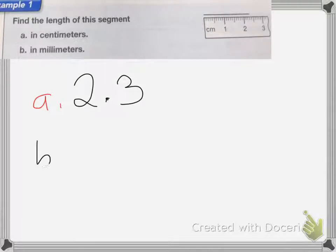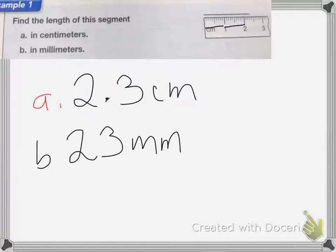In millimeters, if there are 10 millimeters in between each centimeter, that means it's going to be 23 millimeters. Okay, because there's 20 between the 0 and the 2, and then I'm going 3 more, 1, 2, 3, to get 23 millimeters.